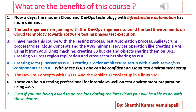Slide 4 — Benefits of this course: 1. Nowadays, modern cloud and DevOps technology with infrastructure automation has more demand. 2. Test engineers are joining DevOps engineers to build test environments on cloud technology for software testing phases and test execution. 3. This course covers the testing process, test automation process, Agile/Scrum process and roles, cloud concepts, and minimal AWS services operations like creating a VM, accessing it from Linux, creating S3 buckets and sharing objects via URL, S3 cross-region replication, cross-account sharing as POC, creating a MySQL server as POC, and a two-tier architecture setup with web server and VPC components as POC. With these POCs, one can be confident in cloud test environment setup.